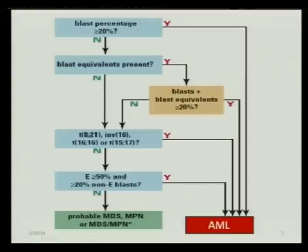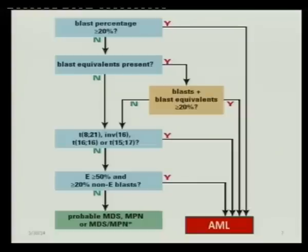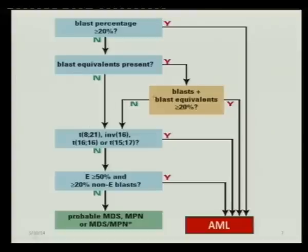This diagnostic algorithm is needed because sometimes one case can fit different entities. The blast count is the cornerstone in the diagnosis of AML — you cannot diagnose AML unless you have a blast count more than 20%. If the blast count is less than 20%, you should check if any blast equivalent is present. You should calculate blast percentage plus blast equivalent; if it exceeds 20%, this is AML.